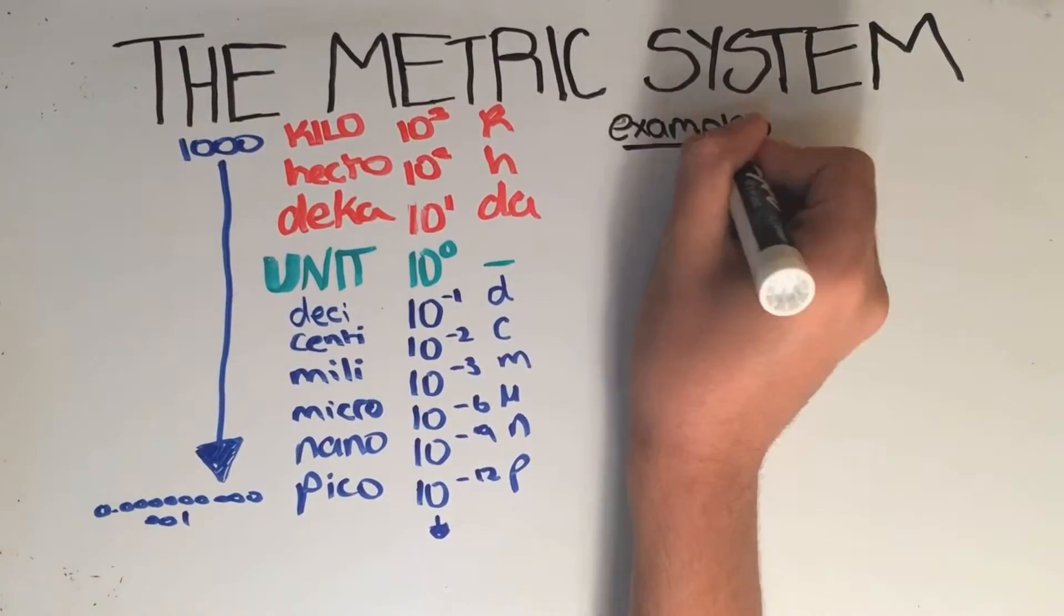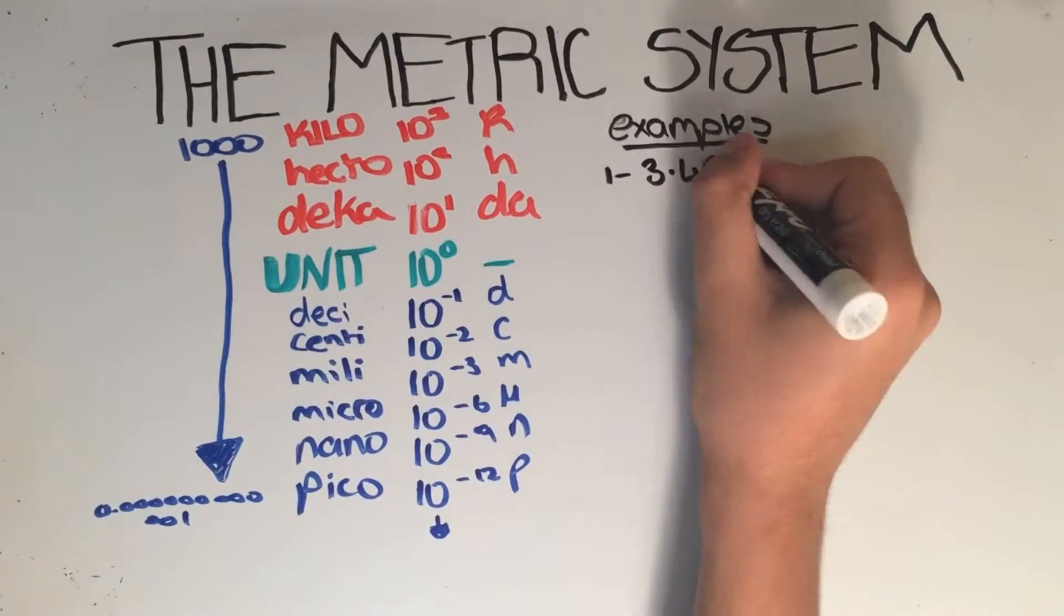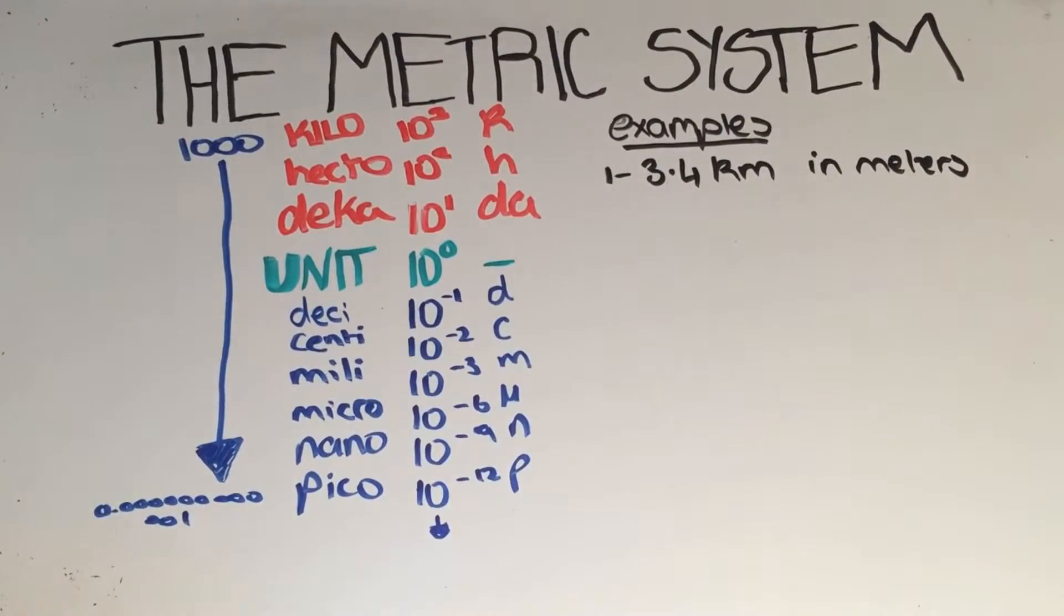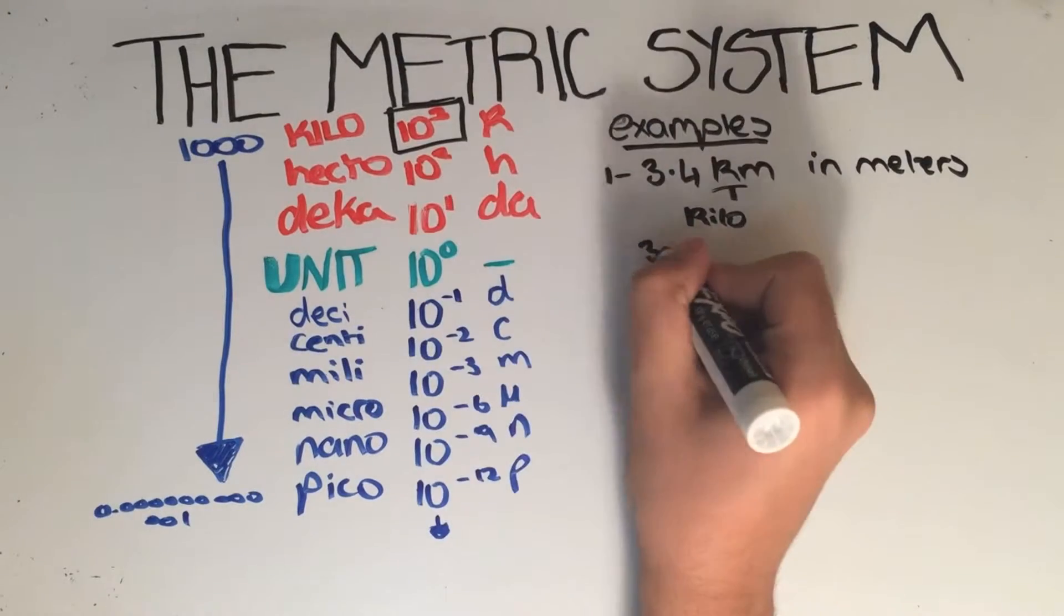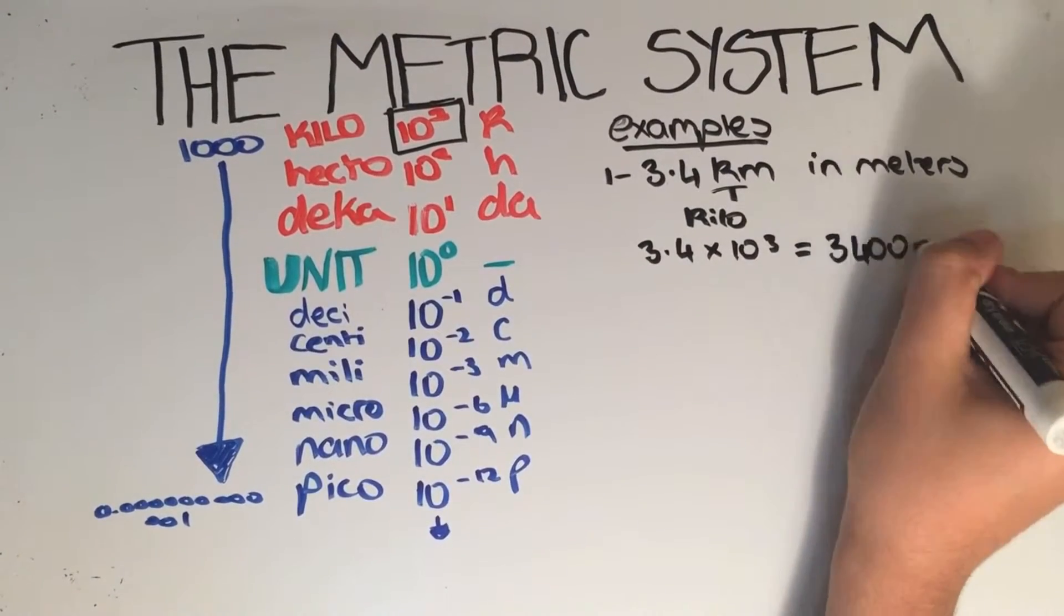So now let's look at some examples. The first one says convert 3.4 kilometers into meters. Because kilo is 10 to the power of 3, your answer will be 3.4 times 10 to the power of 3, which is 3,400 meters.